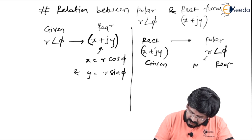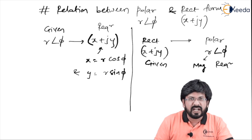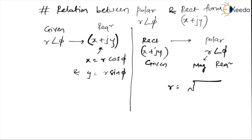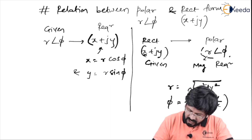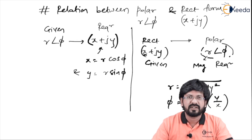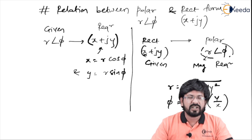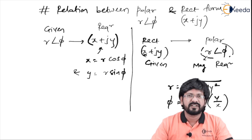To convert rectangular to polar (given x + jy, find r∠φ): the magnitude r = √(x² + y²) and the phase φ = tan⁻¹(y/x). Once you get r and φ, substitute into r∠φ to get the polar form. This concludes the lecture on vector representation — rectangular form, polar form, how to convert between them, and their respective applications for addition/subtraction and multiplication/division.